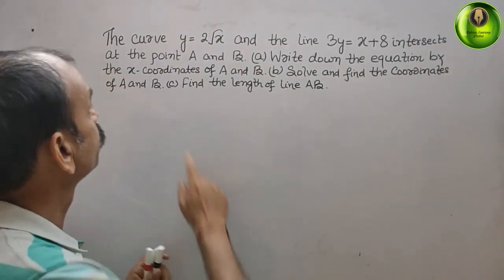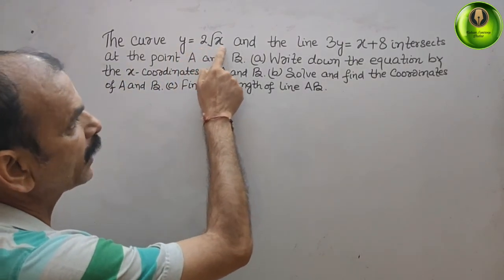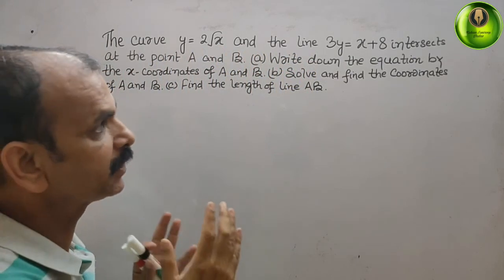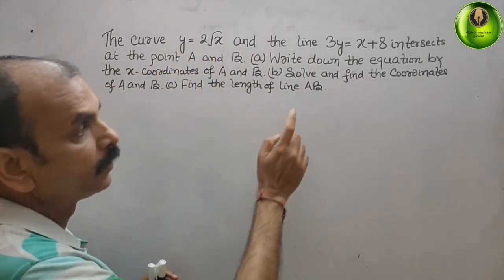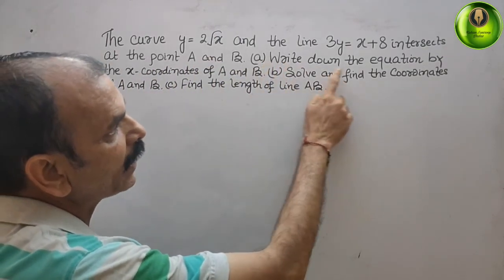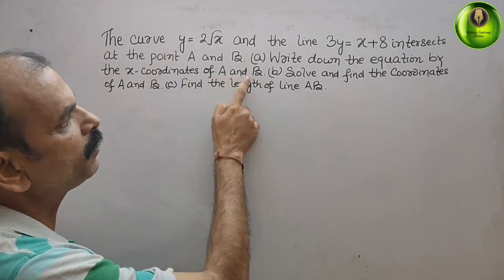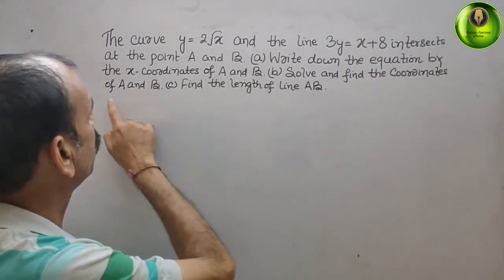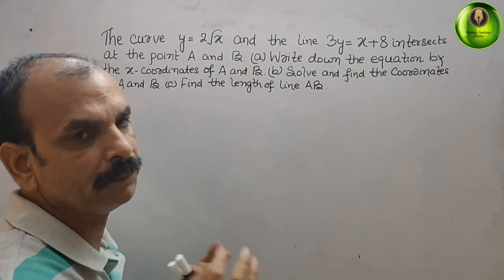The problem gives you the curve y equals 2 root x and the line 3y equals x plus 8, which intersect at points A and B. The questions are: write down the equation for the x-coordinates of A and B, solve and find the coordinates of A and B, and find the length of the line AB.